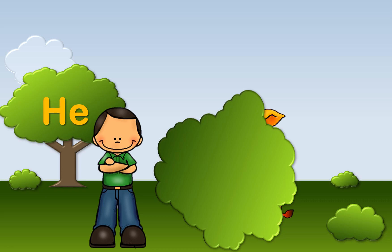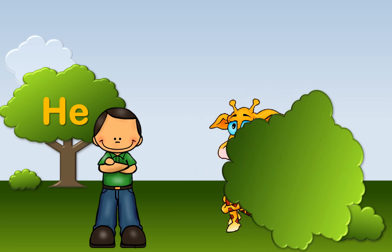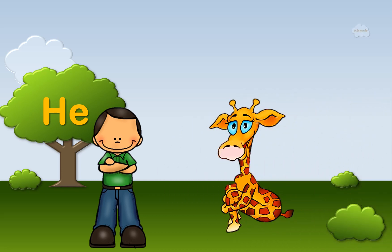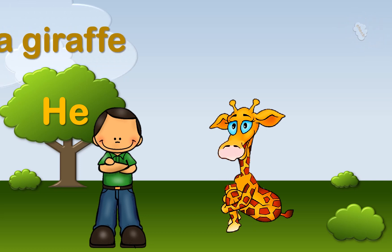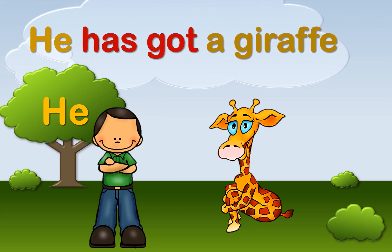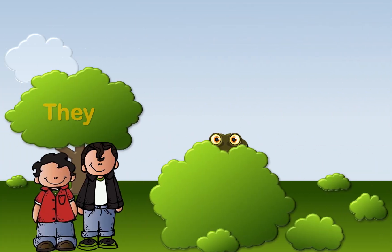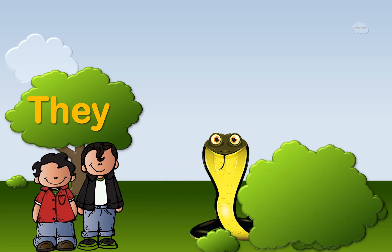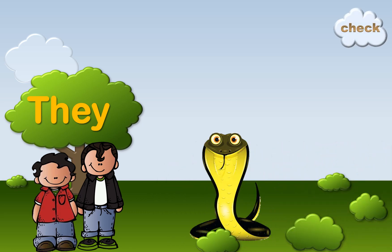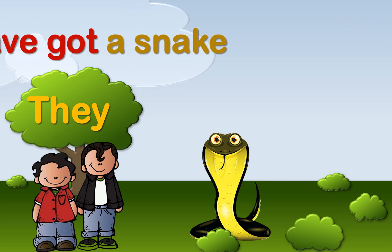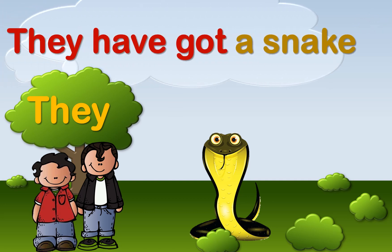What about he? What do you think about this one? He has got a giraffe. What about this? They. Yes, excellent. They have got a snake.